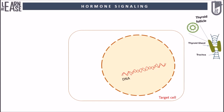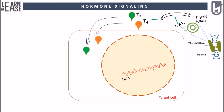Briefly, thousands of thyroid follicles in the thyroid gland produce T3 and T4; these hormones reach the target cell. T3 and T4 easily enter the cytoplasm of the target cell by diffusing through the cell membrane.